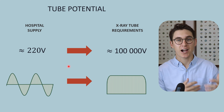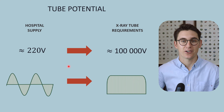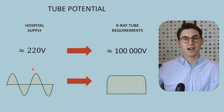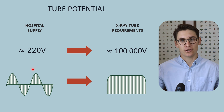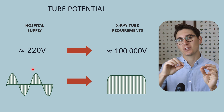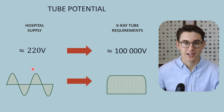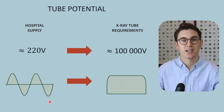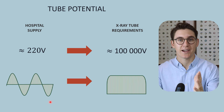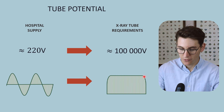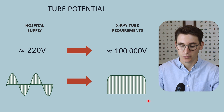The second issue is that the hospital current supply is alternating current — it goes in both directions over time. When providing a tube differential from cathode to anode, we want current flowing in one direction only. We don't want electrons going from the anode toward the cathode. Furthermore, that current is fluctuating, and we want a constant stream of electrons toward our anode. So we need to convert alternating current into direct current and smooth it out so it is constant.